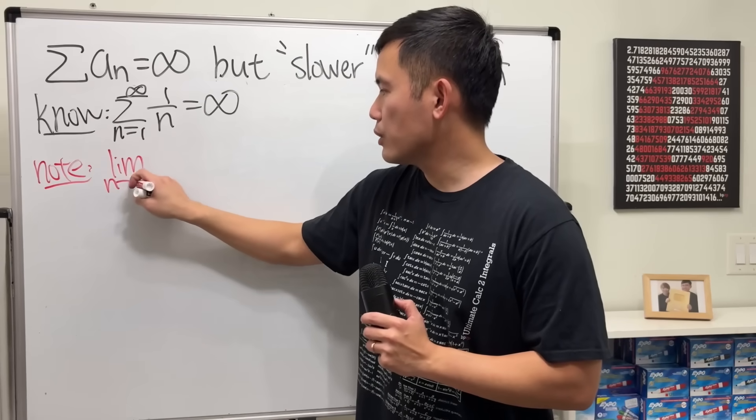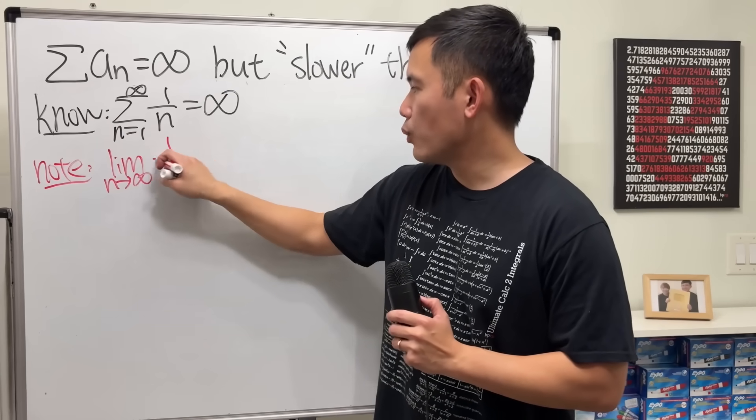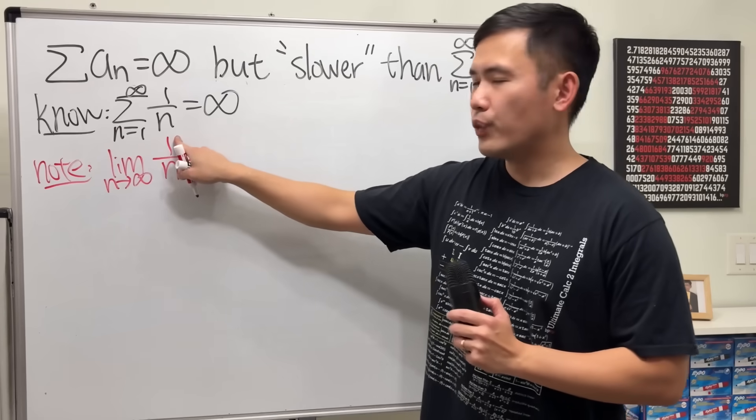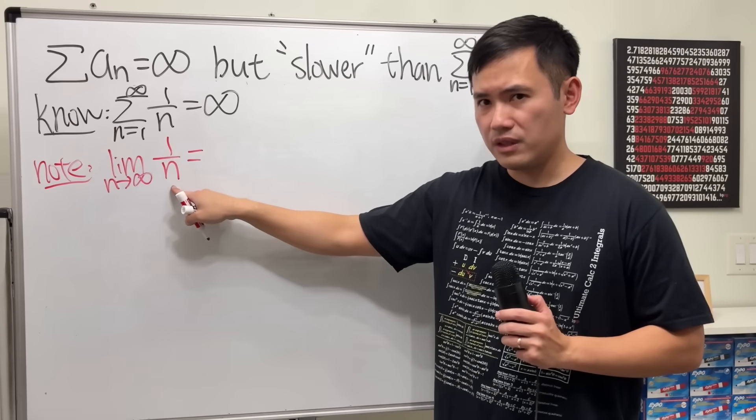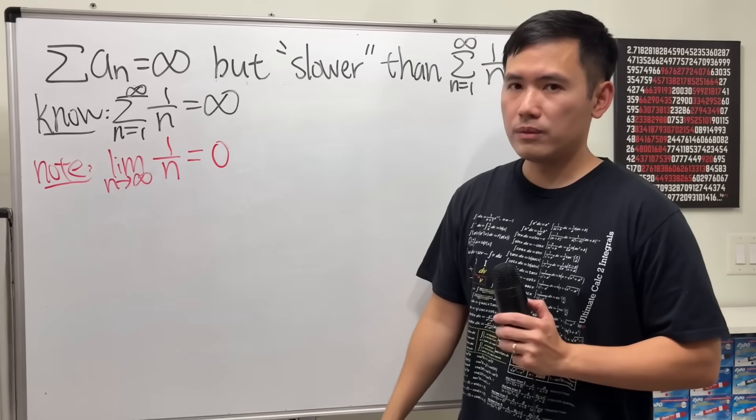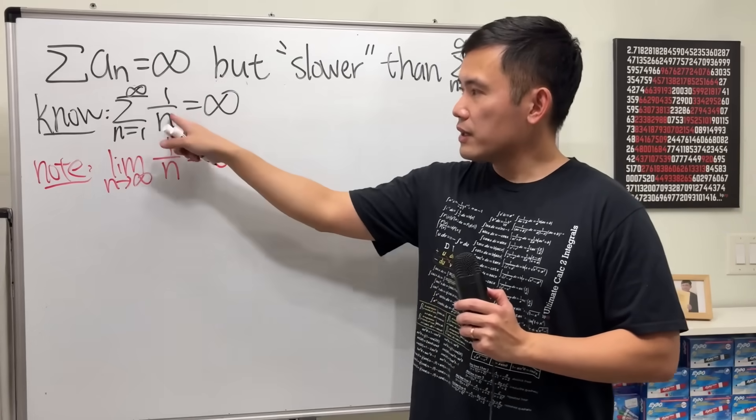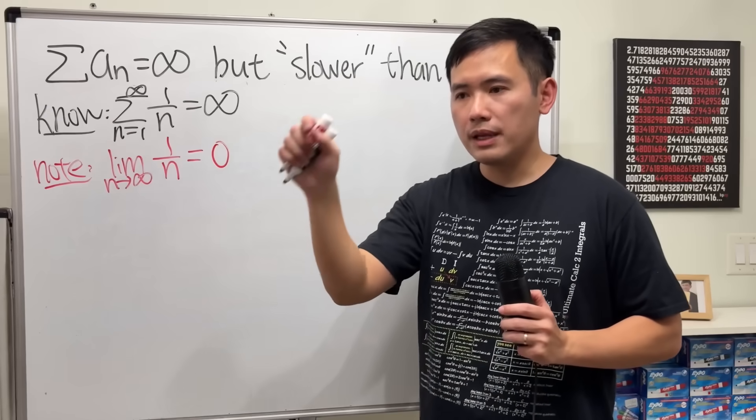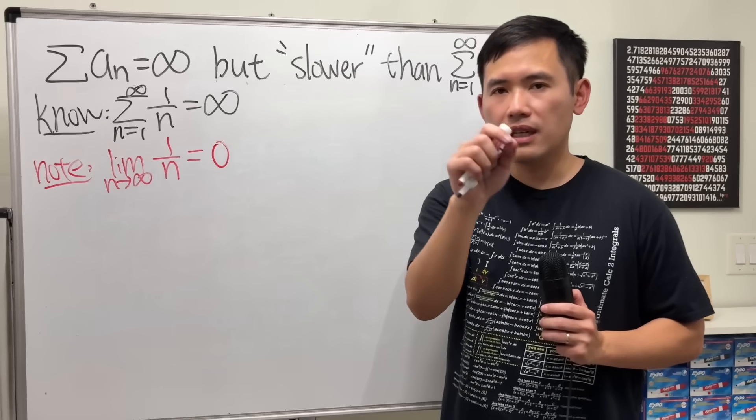if we take the limit as n goes to infinity of 1 over n, we're just going to be getting 1 over infinity, which is 0. So the idea for this right here is that we are doing 1 plus 1/2 plus 1/3 plus dot dot dot.